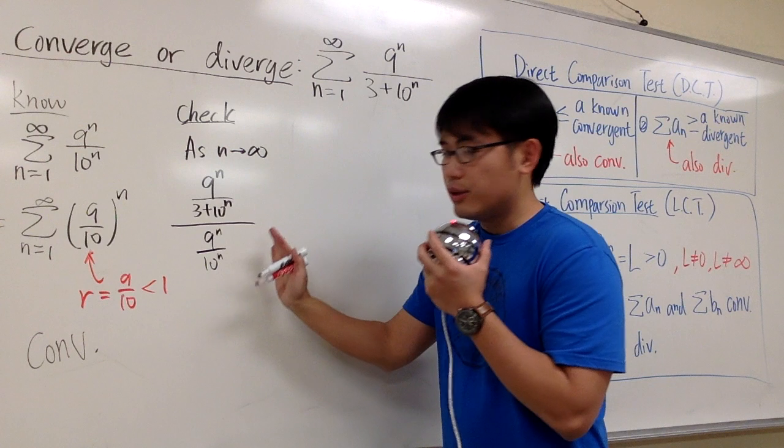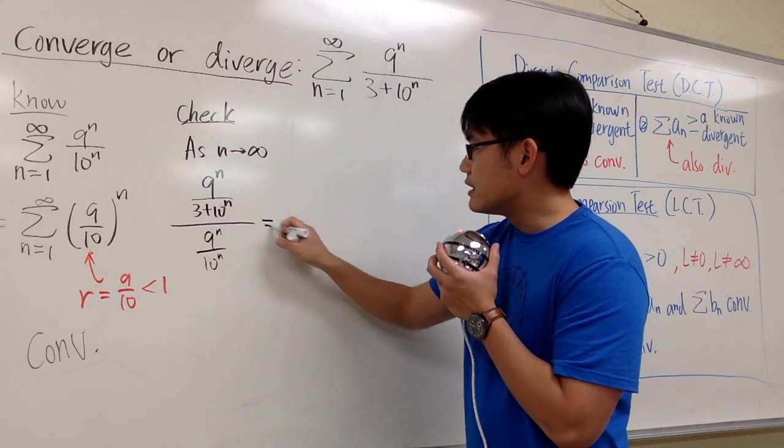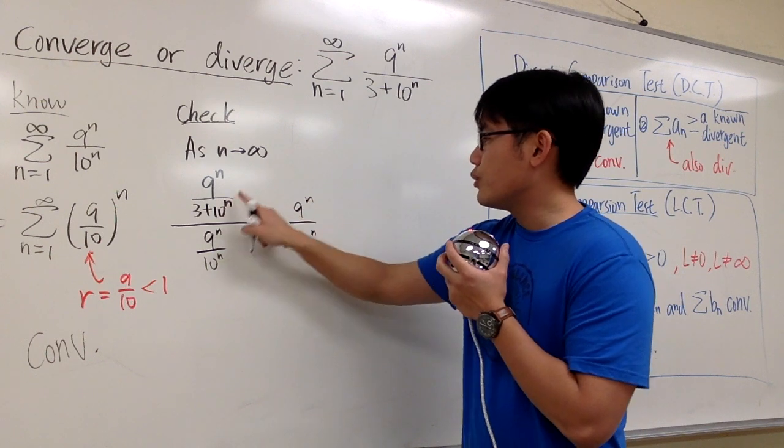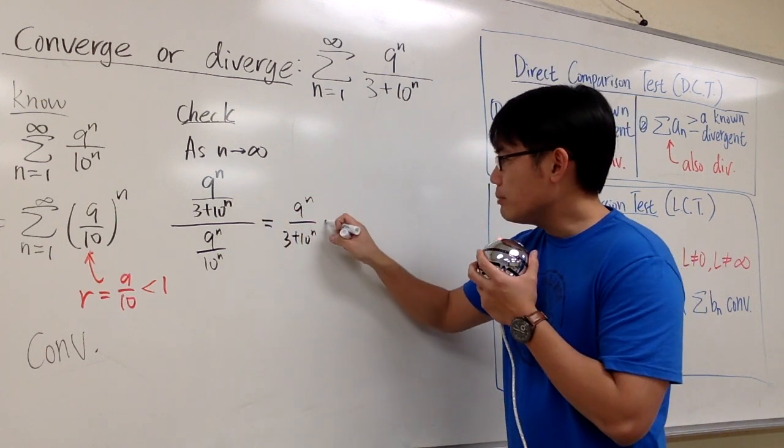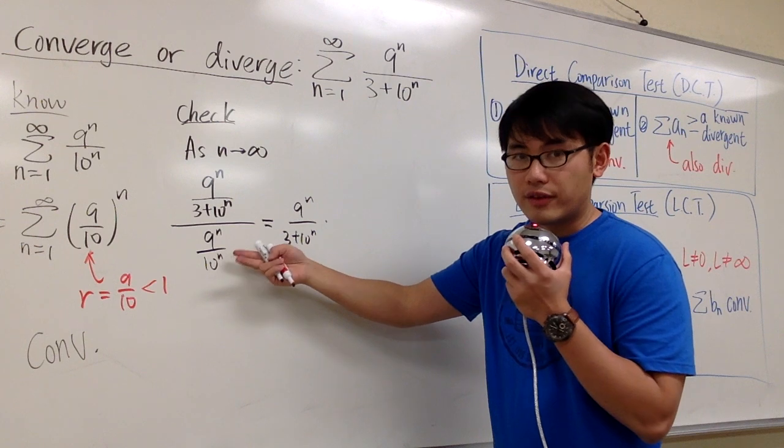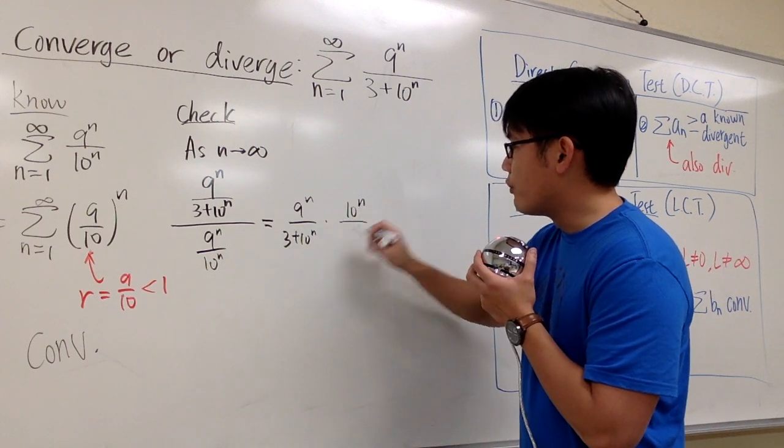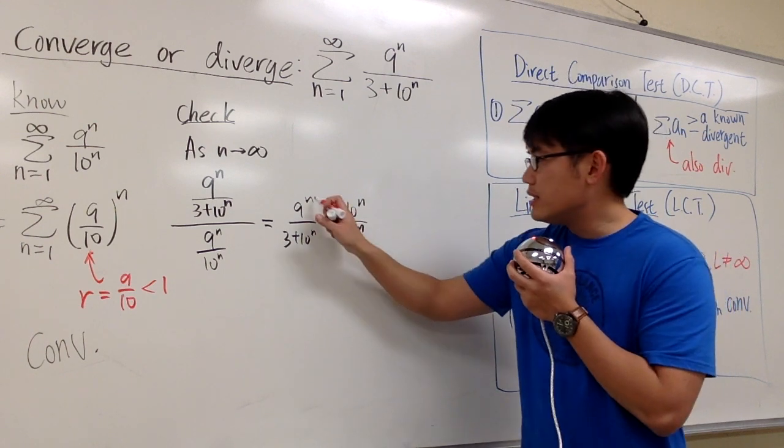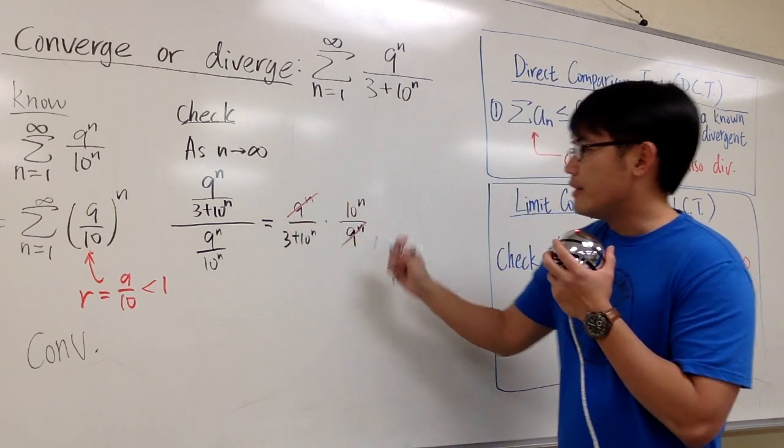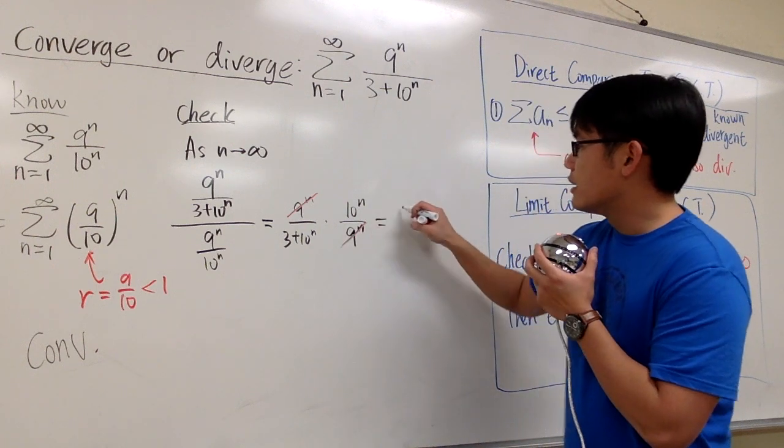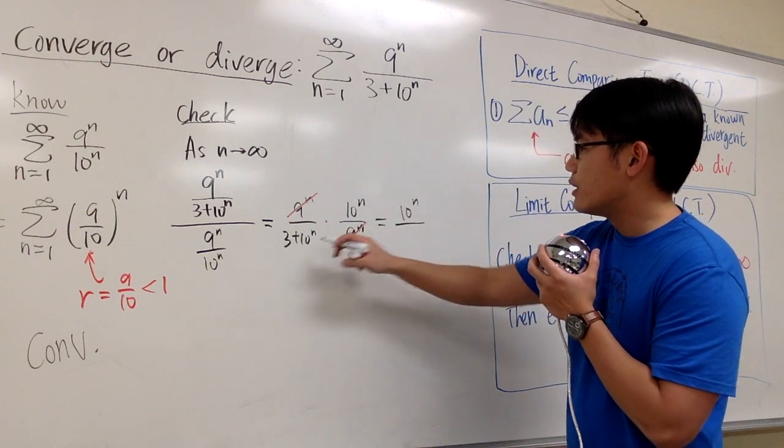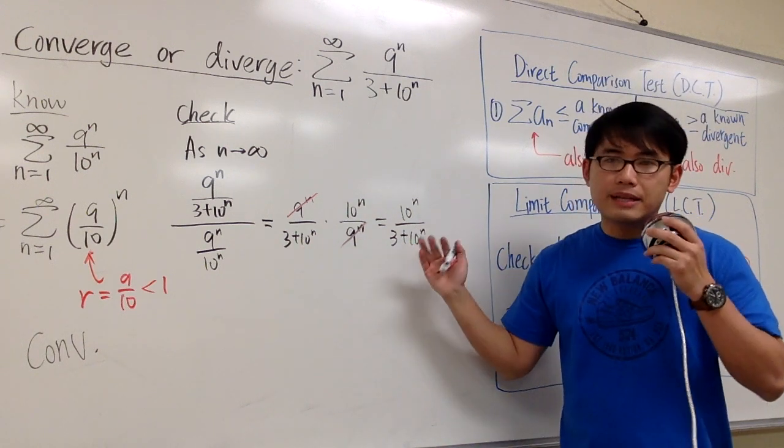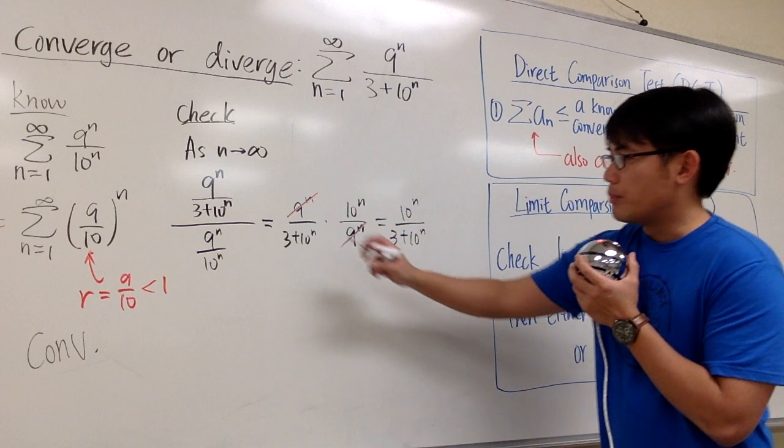Now let's look at this and do some algebra first. This is the same as 9 to the n over 3 plus 10 to the n, the numerator, and then we multiply by the reciprocal of the bottom. So we have 10 to the n over 9 to the n. And as we can see, the 9 to the n pretty much cancel each other out. And this is just the same as 10 to the n over 3 plus 10 to the n. And so far, all these steps are just algebraic steps. So that's why I put it on the equal sign.